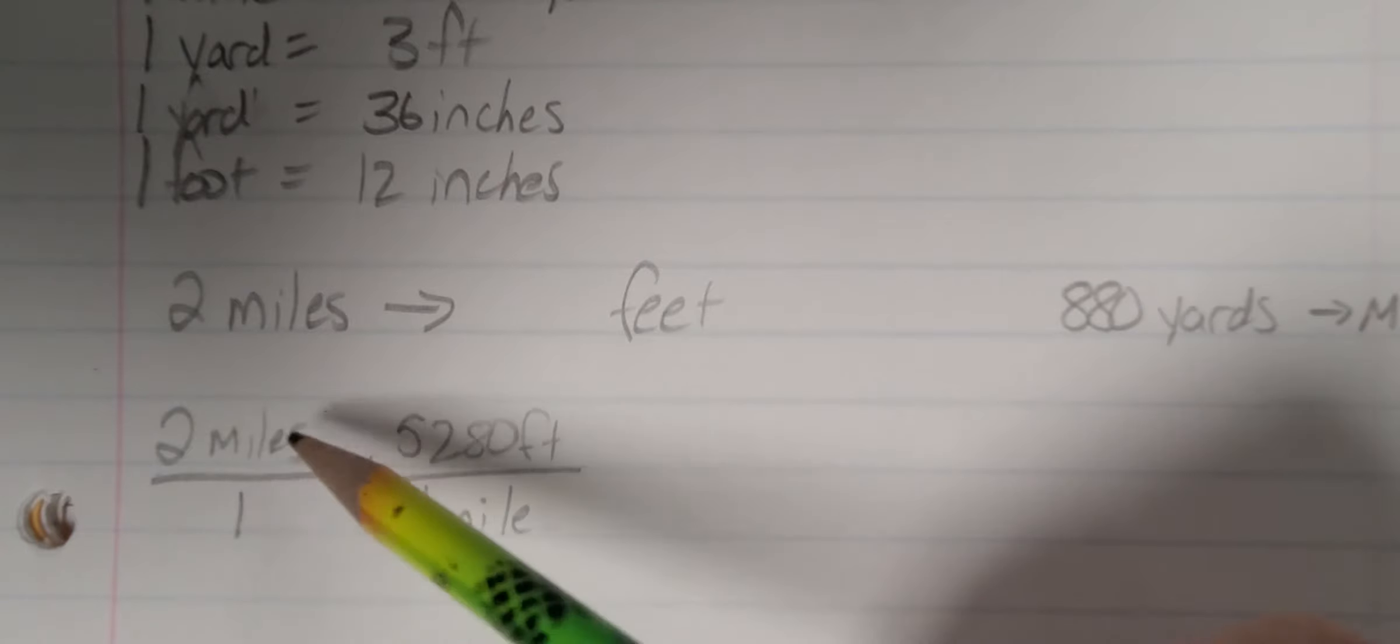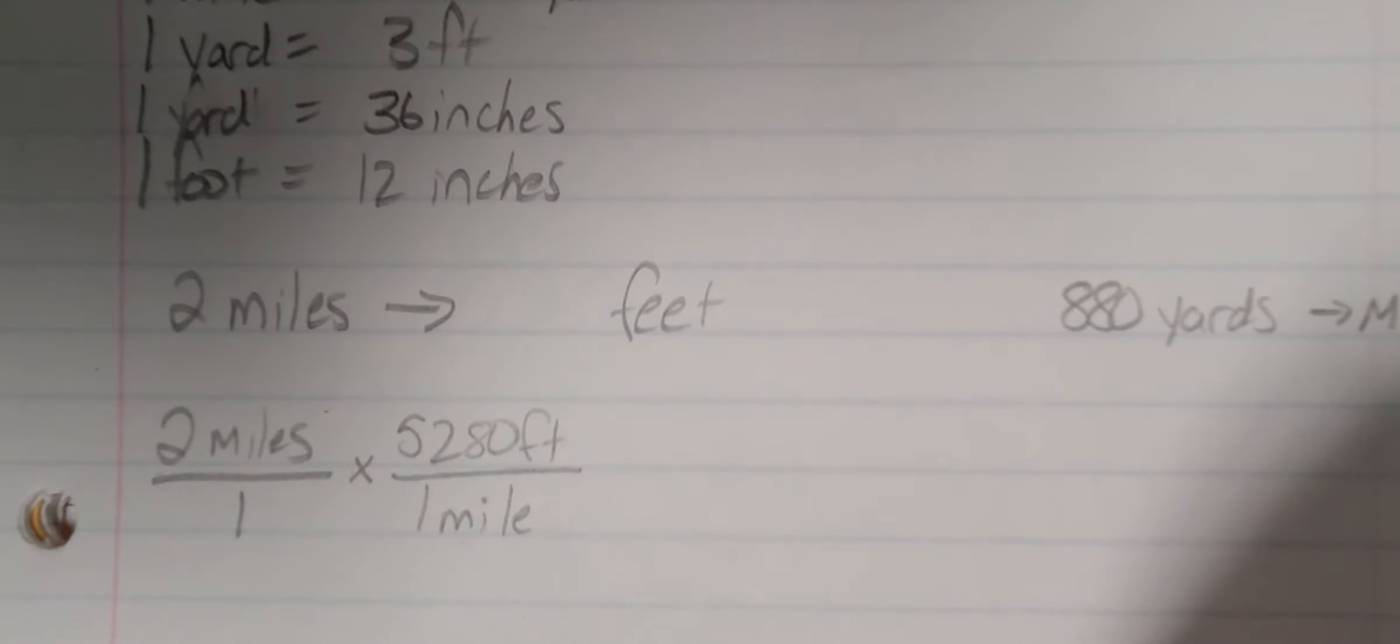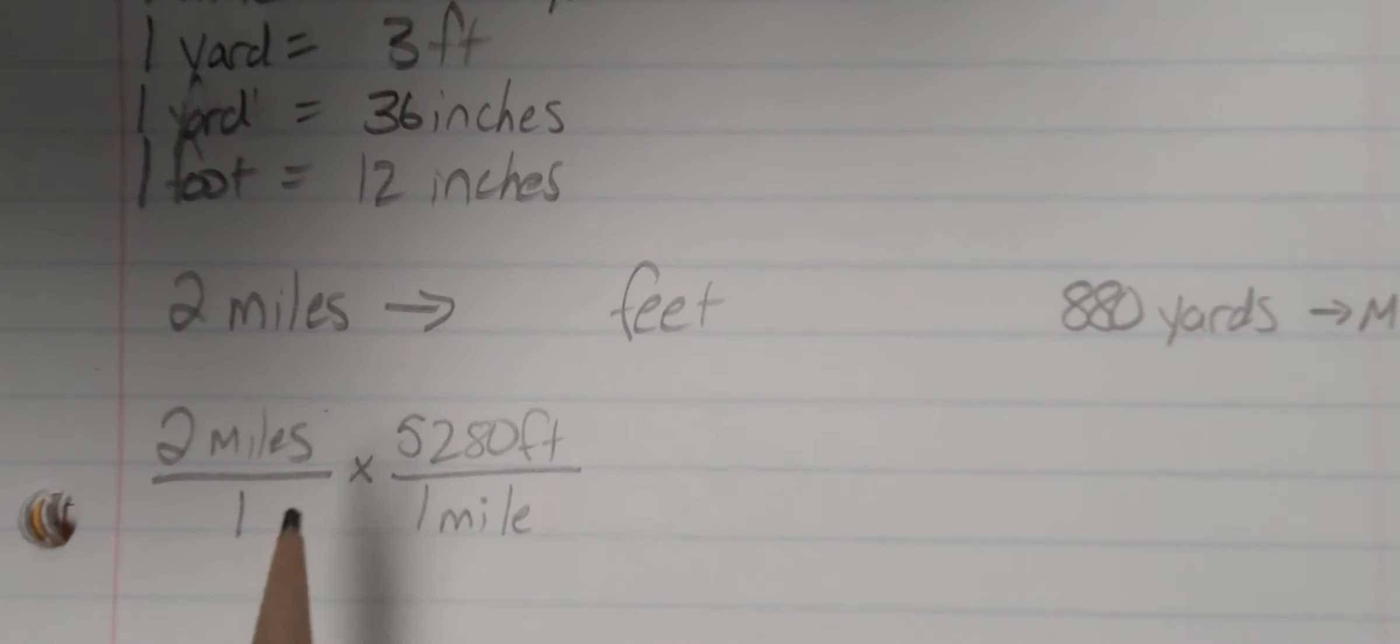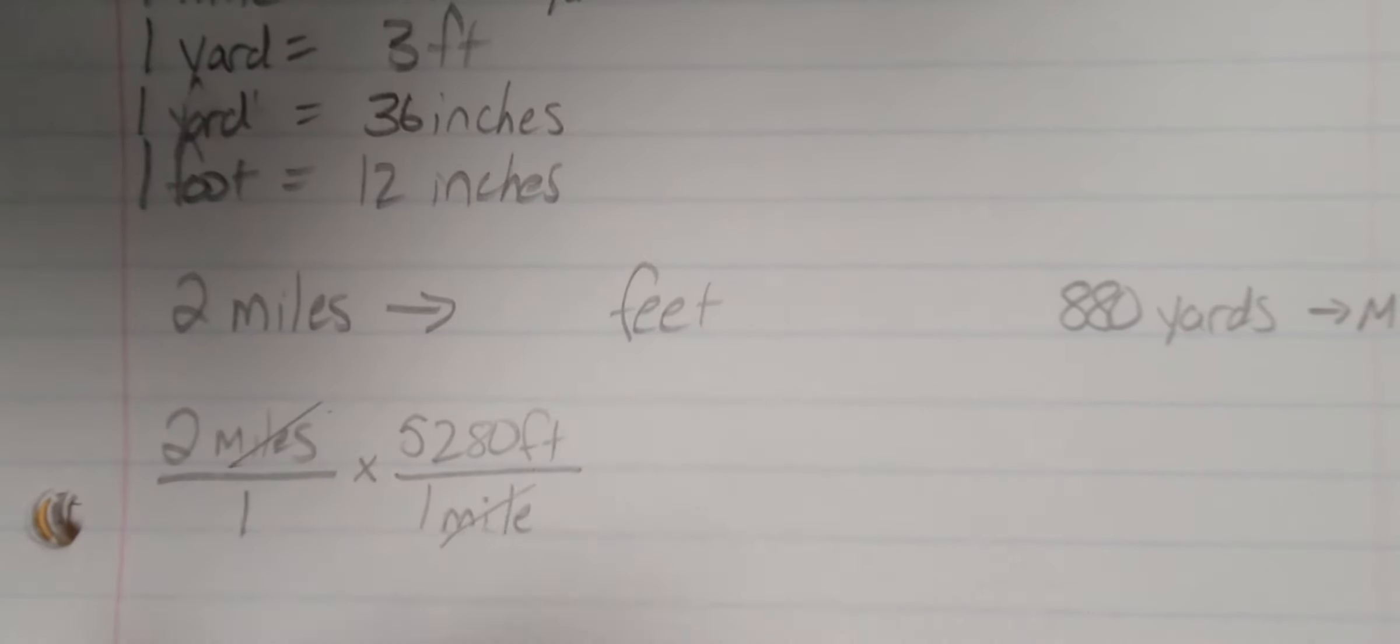My starting unit is 2 miles. I'm going to put that over 1 because I'm not going to need any units with it yet. Now, for feet, I want to have my units that I'm trying to get rid of diagonal from each other, kind of like how we're doing cross-canceling for fractions. So this is going to get me miles here and miles here, so I can then cross these out, and I lose my miles.